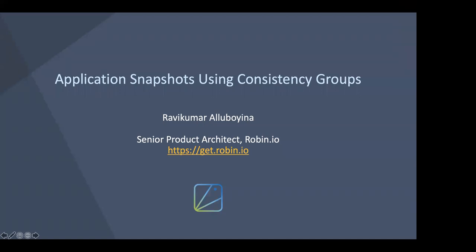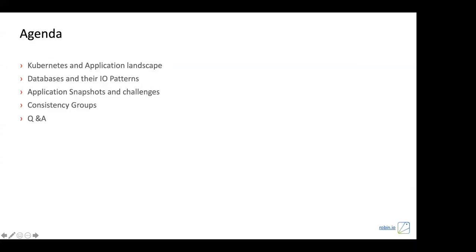Hi, this is Ravi Kumar Aluboyina. I work for Robin.io as Senior Architect. Robin is an application orchestration platform built on top of Kubernetes to run data-heavy applications which fall into SQL, NoSQL, and big data segments. Robin is the platform to run Oracle RAC, Postgres, MySQL, MongoDB, Cassandra, Cloudera, Kafka — any data-heavy application can be run on the Robin platform. With that brief introduction, let's get into our agenda.